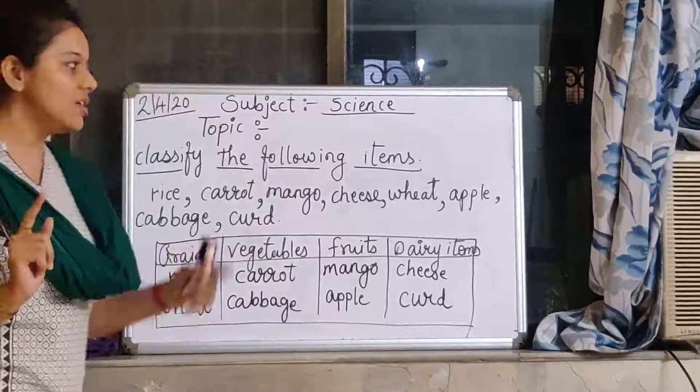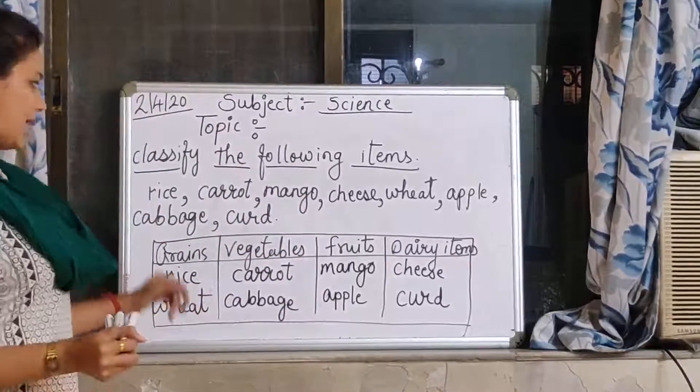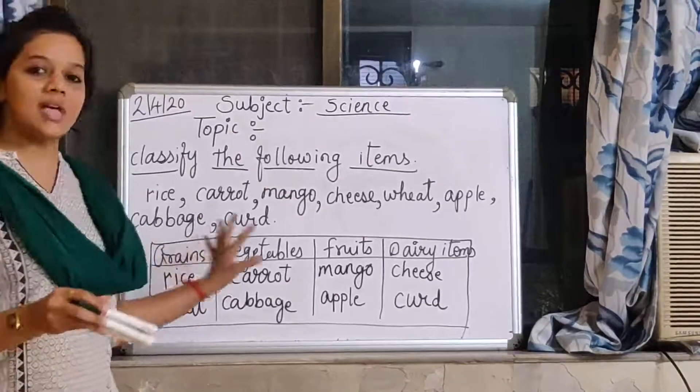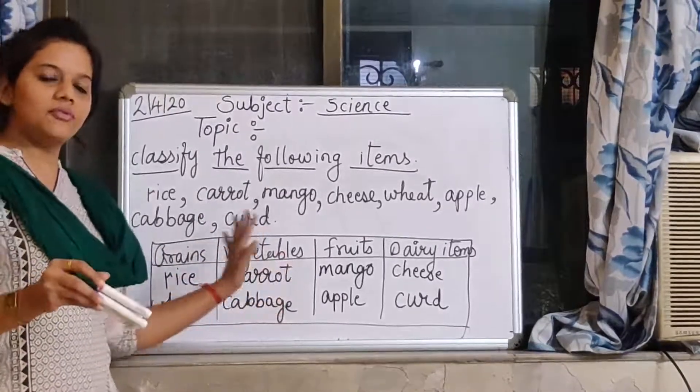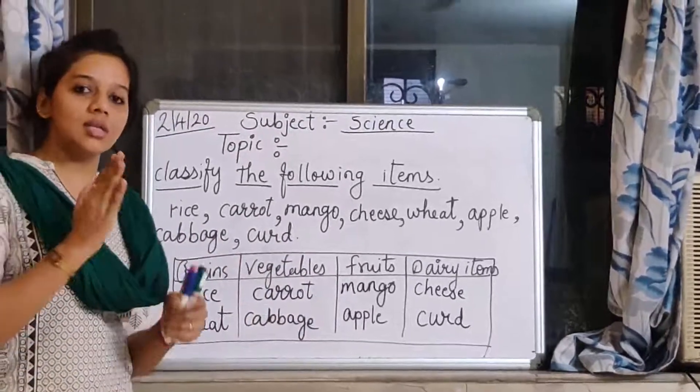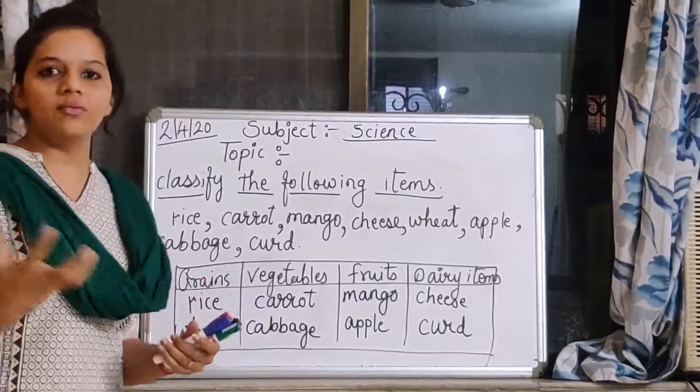To get energy we eat food every day. Now we don't eat every day chapati. We eat different items every day because food items are different. And we eat different food items. Why do we eat different items? Because each item contains different nutrients in different food items.